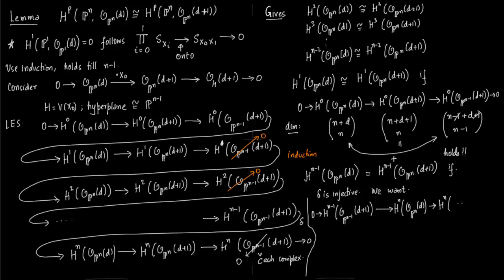So if we have this short exact sequence from H^(n-1) to H^n(O_P^N(d)), so basically I have just taken the last three terms of the long exact sequence, forgetting about the term which is zero because of the Čech complex. So if this is a short exact sequence we are done.